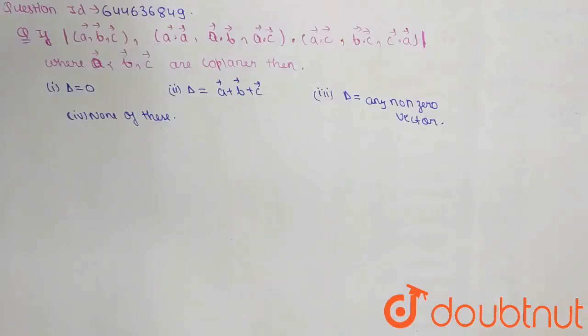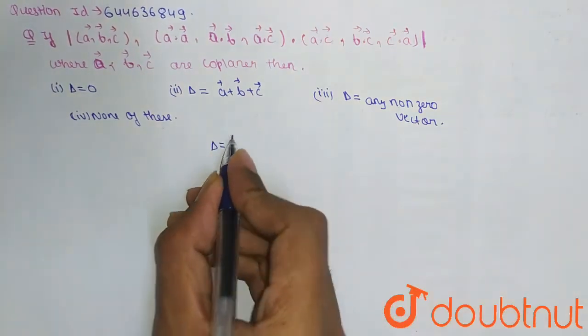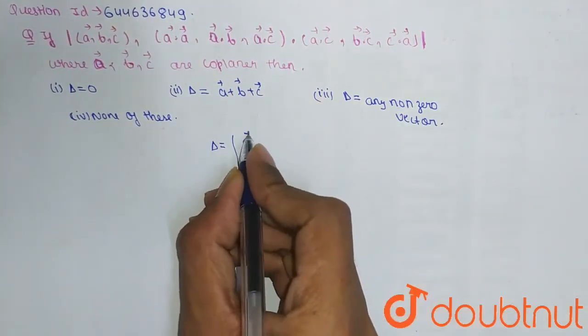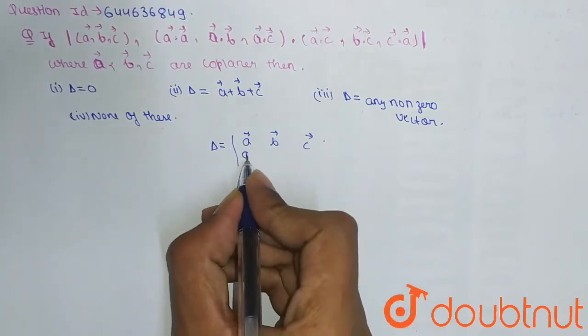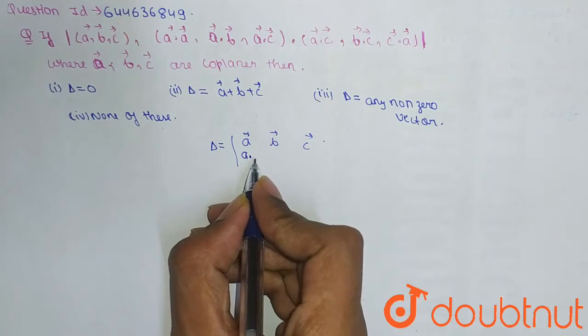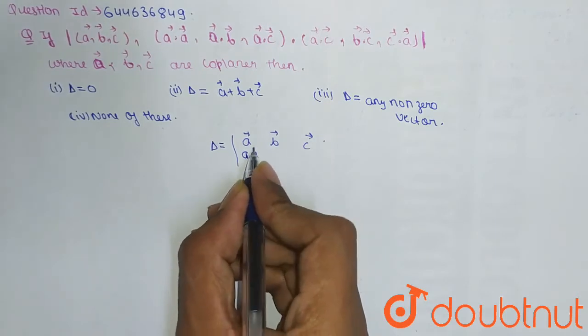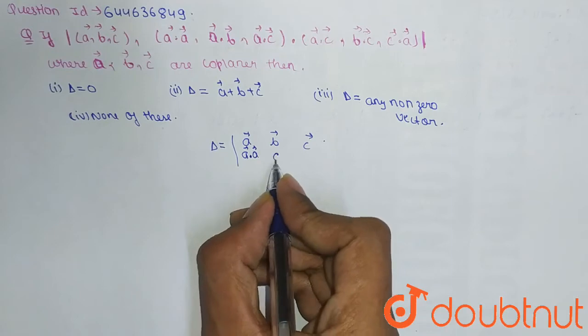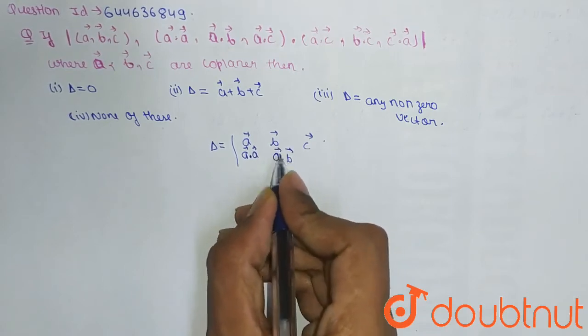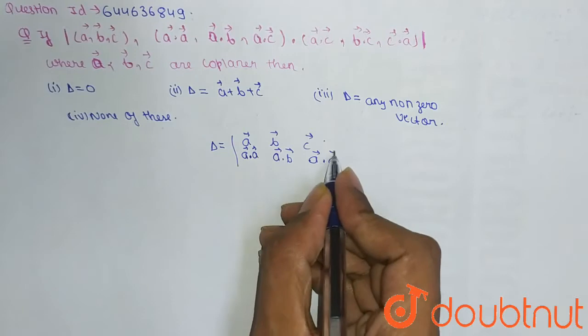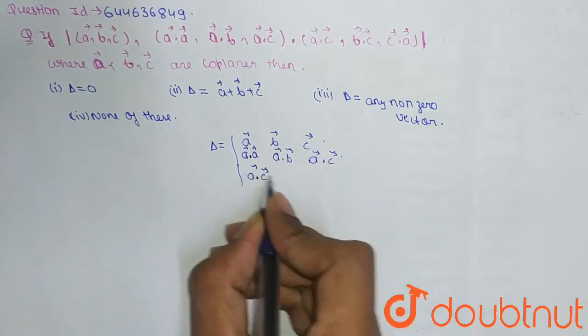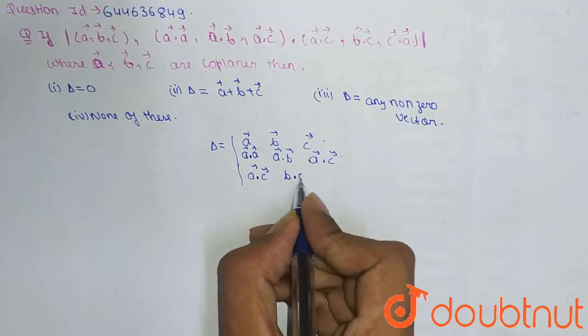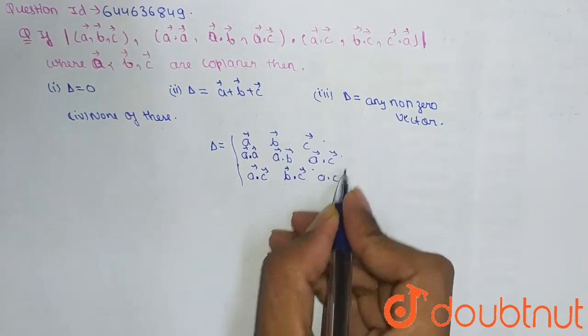Our next question is on vectors. The question gives a determinant containing A vector, B vector, C vector, A dot A vector, A dot B vector, A dot C vector, and then A dot C vector, B dot C vector, A dot C vector.